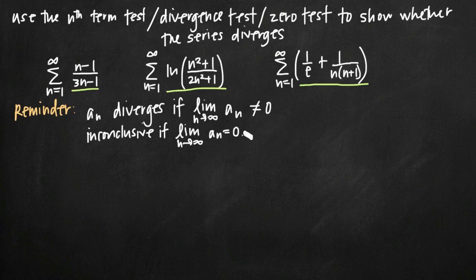But if the limit is equal to zero, we haven't shown that the series converges. This test is just inconclusive in that case — we can't get any information from it and would have to use a different test. That's why I call it the divergence test: it reminds me we're only making conclusions about divergence, not convergence.